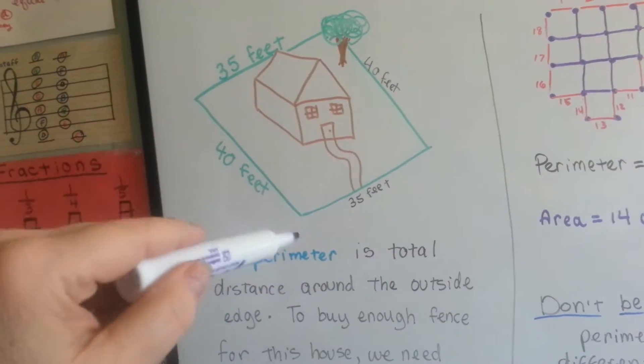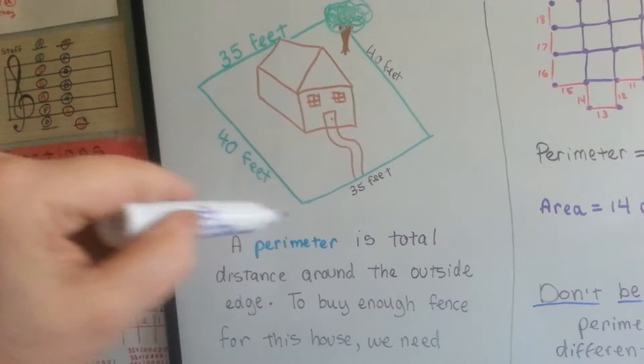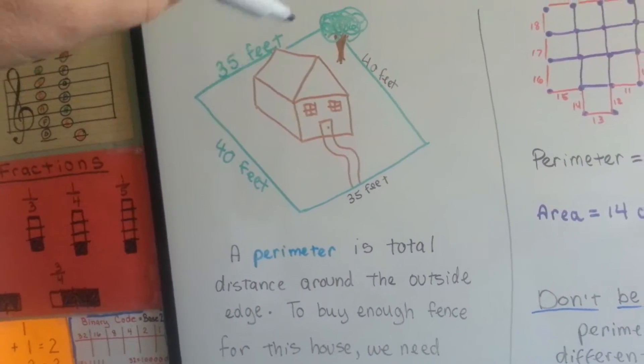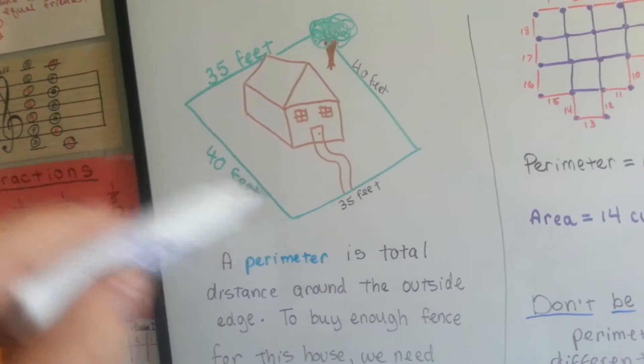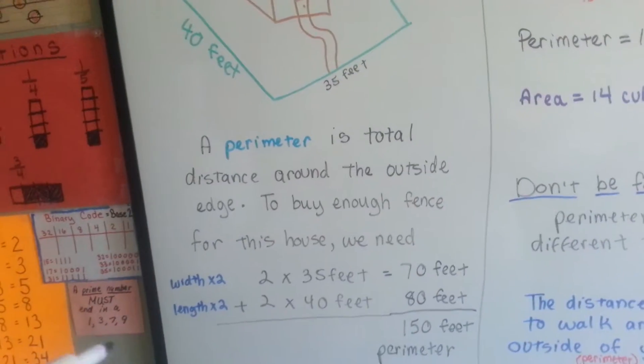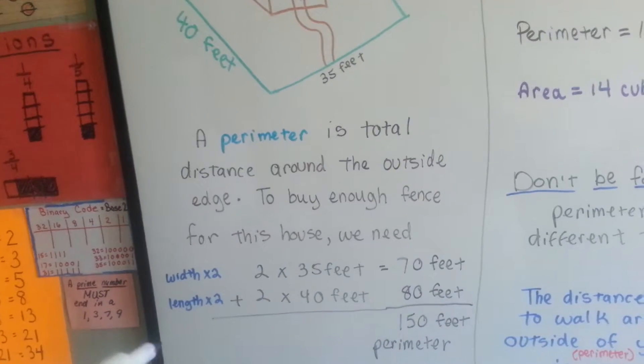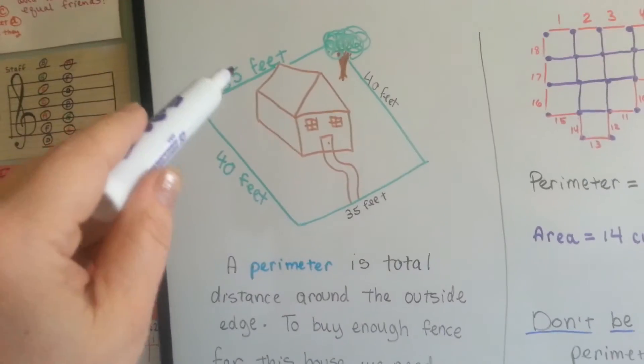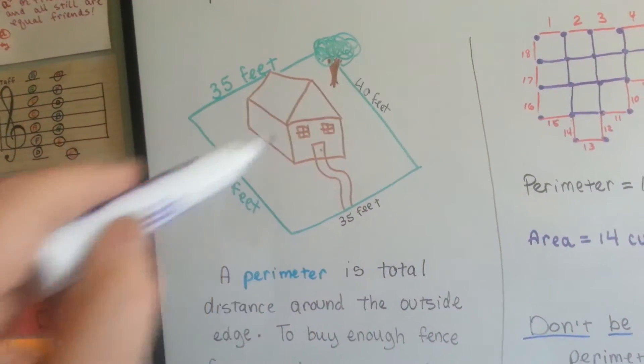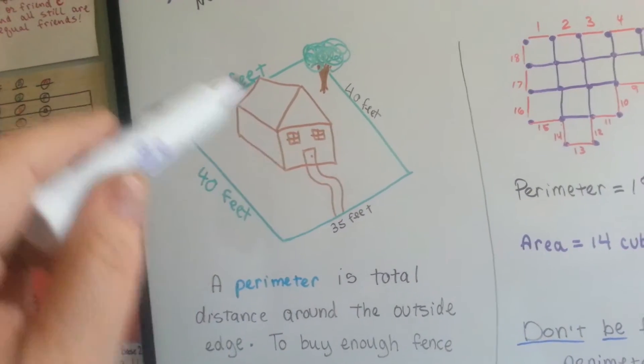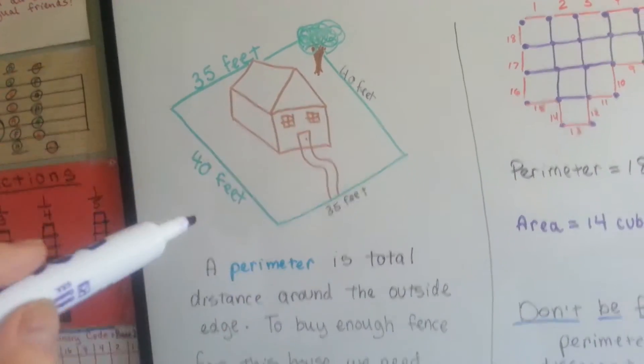We need 35 feet, 40, 35 feet, 40. So if this is a rectangle, these two ends are 35 feet and the two sides are 40. In order to get enough fencing, we need 2 times 35 and 2 times 40. We need 2 times the width and 2 times the length.